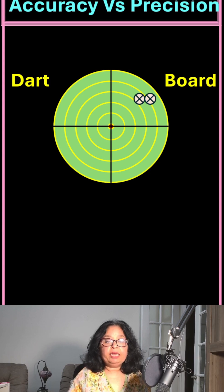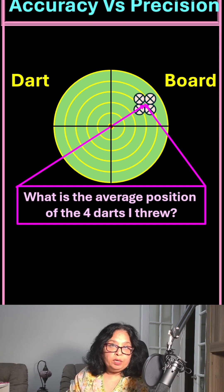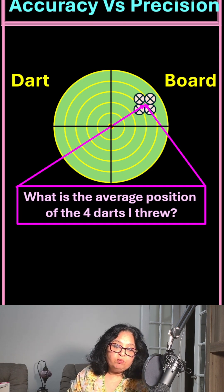Well, if my darts had ended up like this, where is the average position of these four darts now? Here, the arrows are pointing to the average position of these four darts.